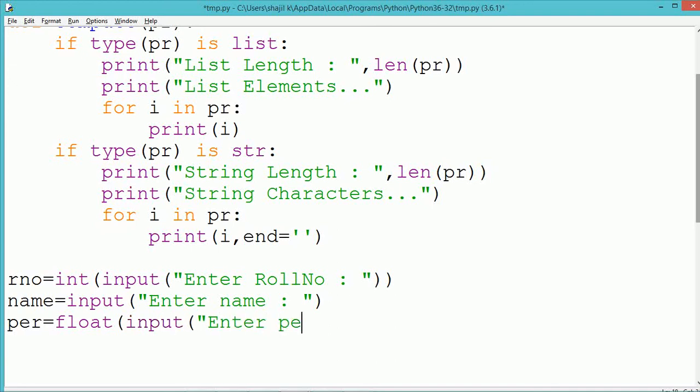Third, we are using another variable per which is used to store the percentage of the user. By using these three variables rno, name, and per, a list is created with the name list1.